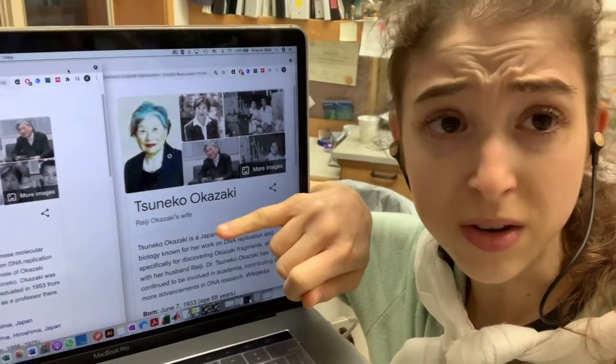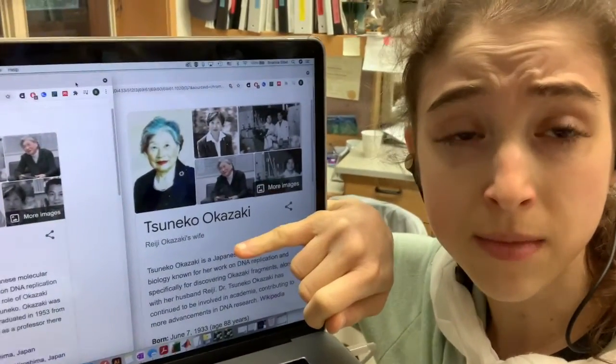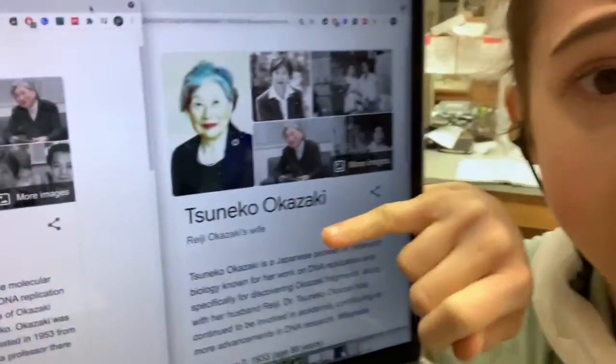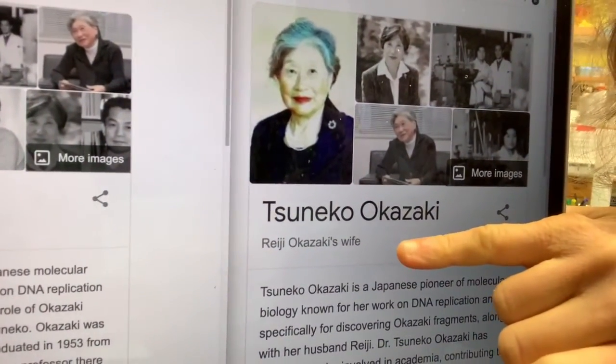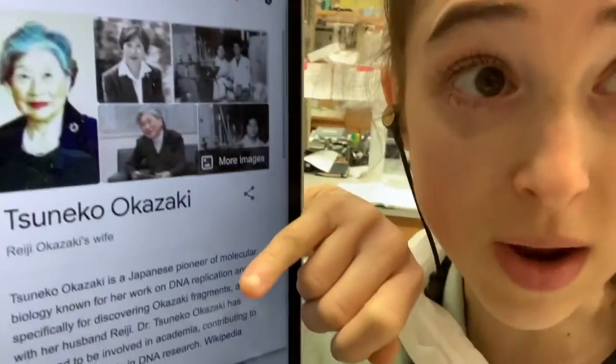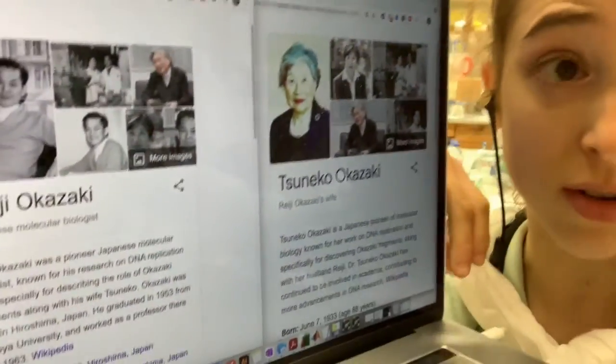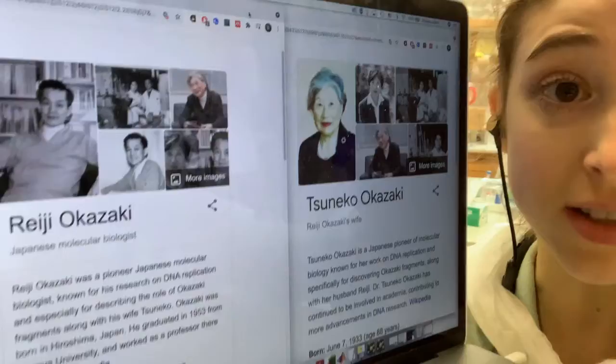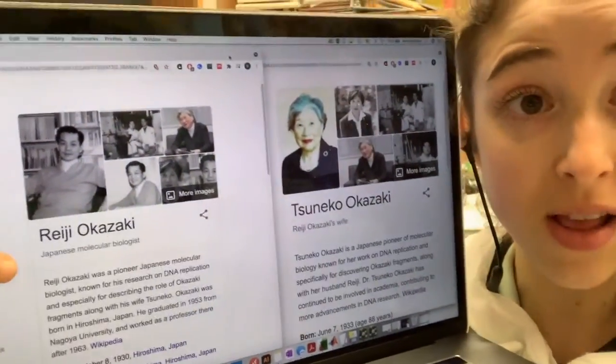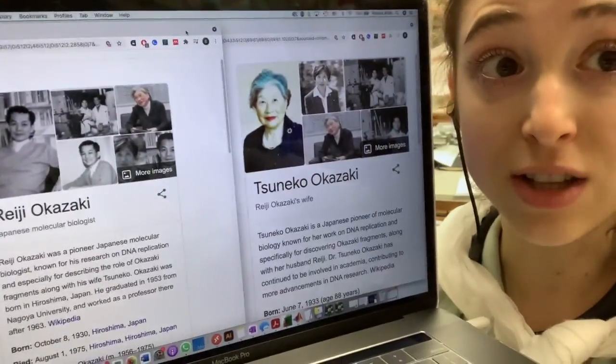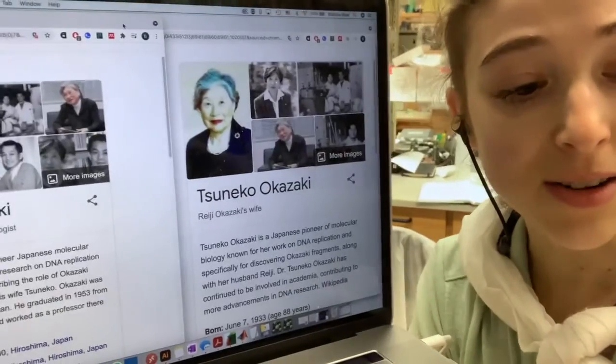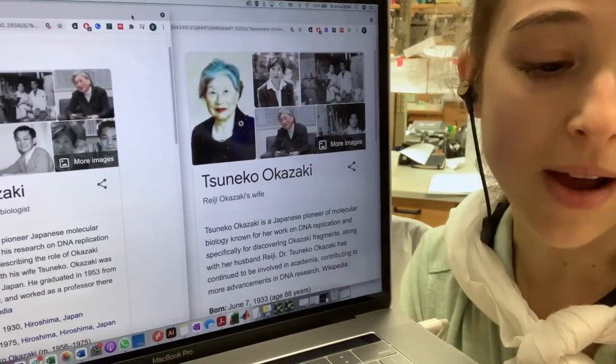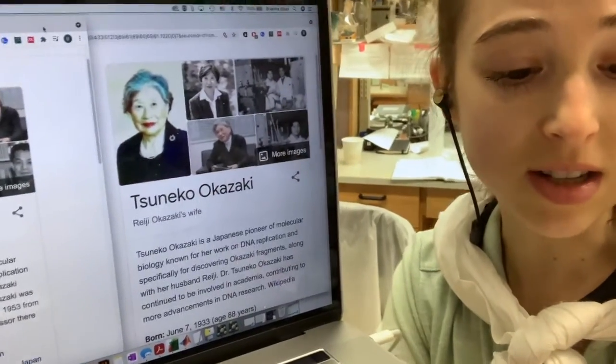Yesterday, I went to Google Tsuneko Okazaki, this amazing molecular biologist, and look how she's described: Riji Okazaki's wife. So Riji Okazaki was her husband, who was, and he's described as a Japanese molecular biologist. And the thing is, the two of them work together to make these incredible discoveries about DNA replication, so how DNA is copied.